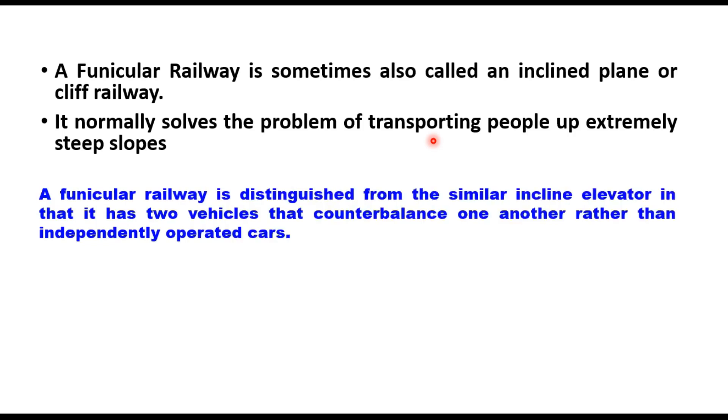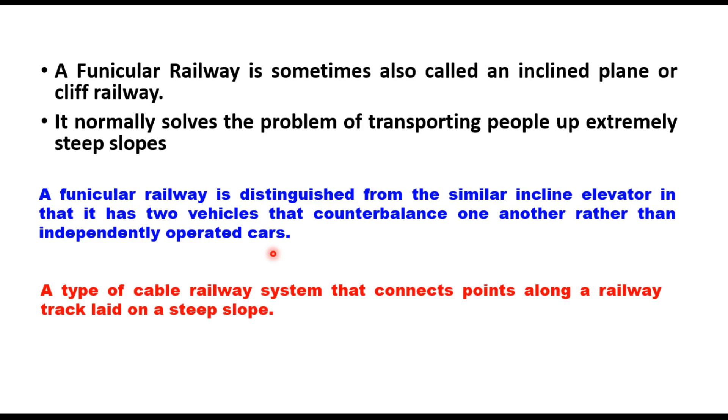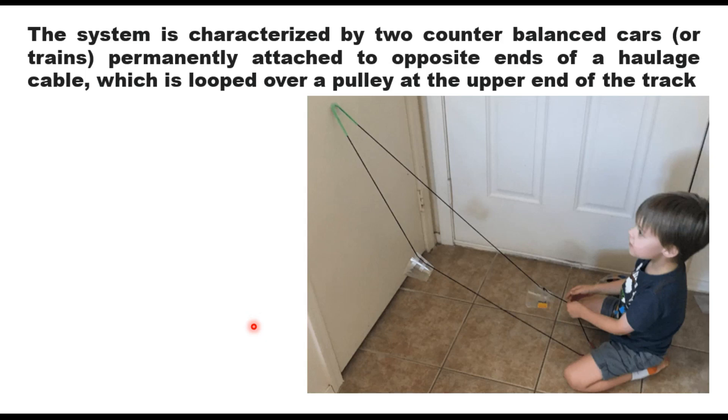A funicular railway is distinguished from the similar inclined elevator in that it has two vehicles that counterbalance one another rather than independently operated cars. This is a type of cable railway system that connects points along a railway track laid on a steep slope, and this slope can be very steep, even sometimes more than 60 degrees. The funicular railway has two counterbalanced cars or trains which are permanently attached to opposite ends of a haulage cable which is looped over a pulley at the upper end of the track.